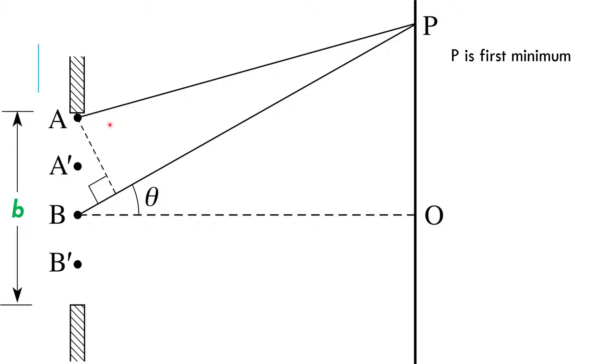The setup here is that every wavelet interferes with another wavelet exactly halfway down the slit. So here's wavelet A right at the very, very top of the slit, and here's wavelet B right smack in the middle. These two are interfering with one another destructively.